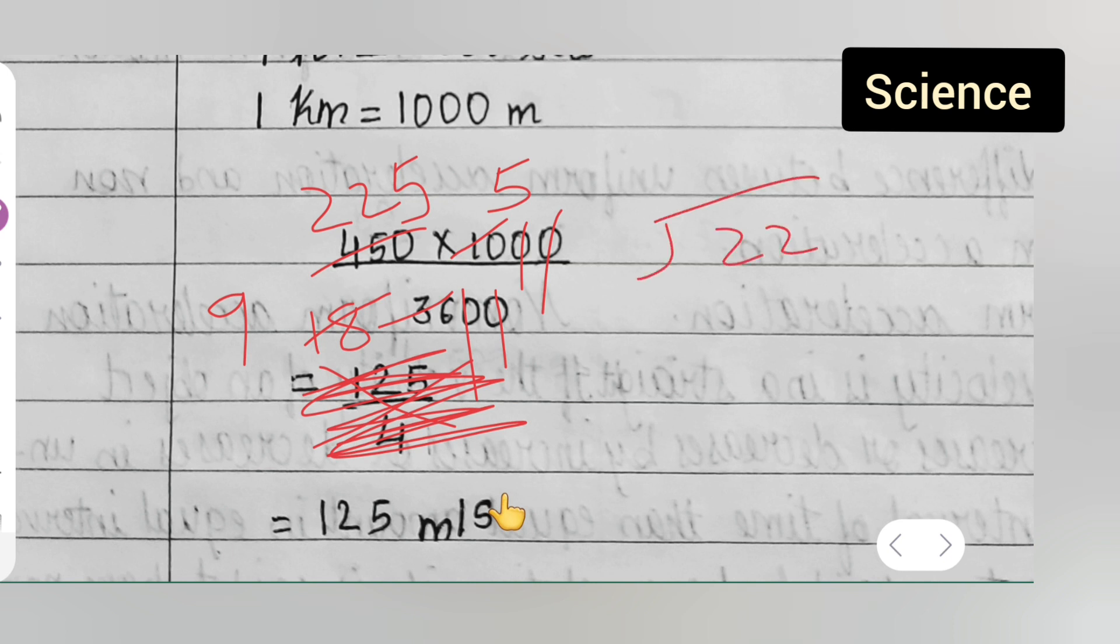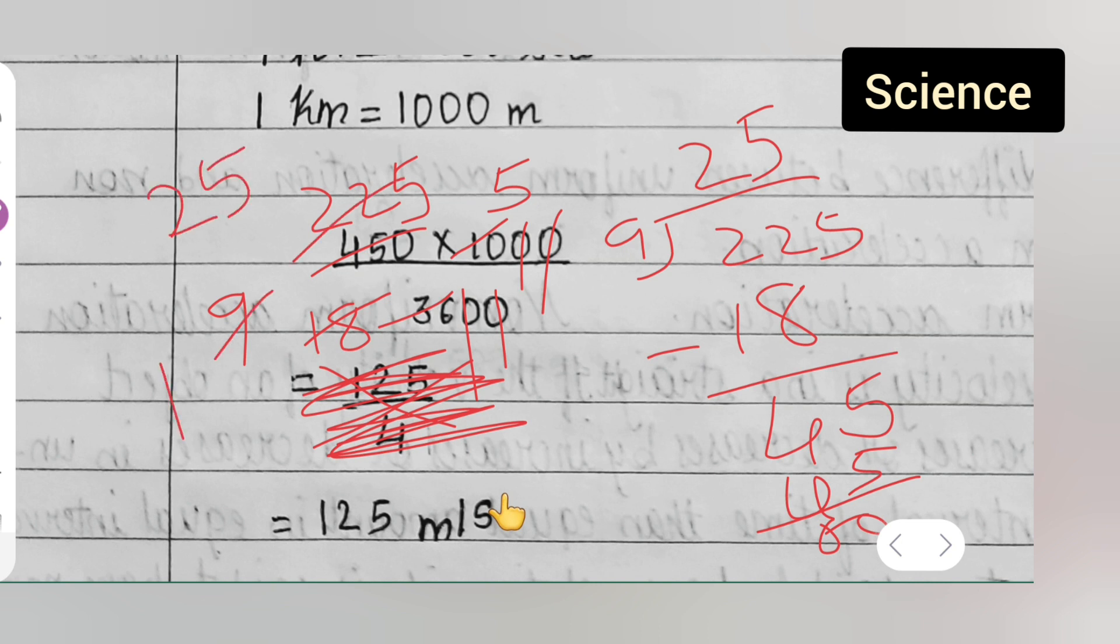Then divide it, 2, 2, 5, and here it is 9. So 9 twos are 18, 4 will remain. And this 5, bring it down, so 9 fives are 45, so what you will get, 0. So 9 twenty-fives are.